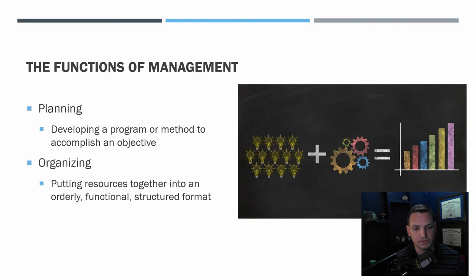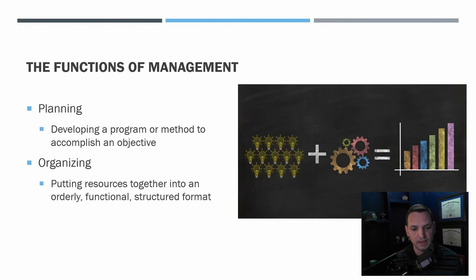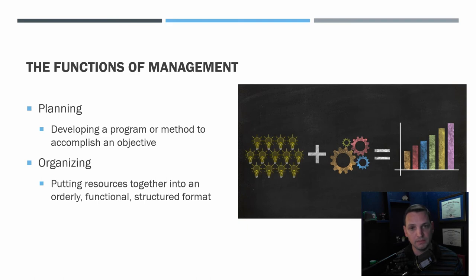Now let's talk about functions of management. Planning is developing a program or method to accomplish an objective — pretty much everybody does this every day. When you wake up, you plan your day. As a leader, your objectives are on a bigger scale. Organizing is putting your resources together into an orderly, functional, structured format. With policies, procedures, and training, you're able to organize your day, shift, or month and make sure all resources and plans are aligned to meet your goal.